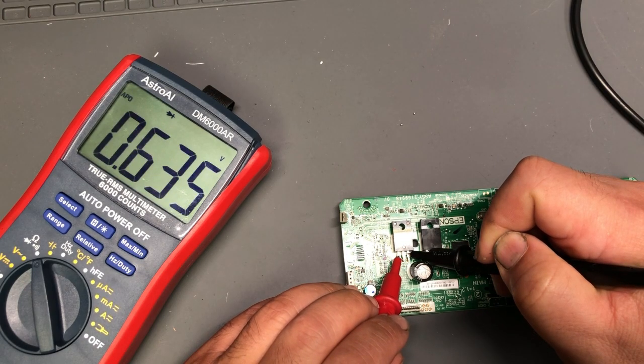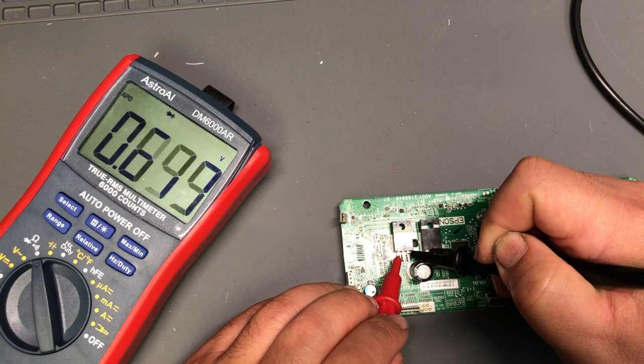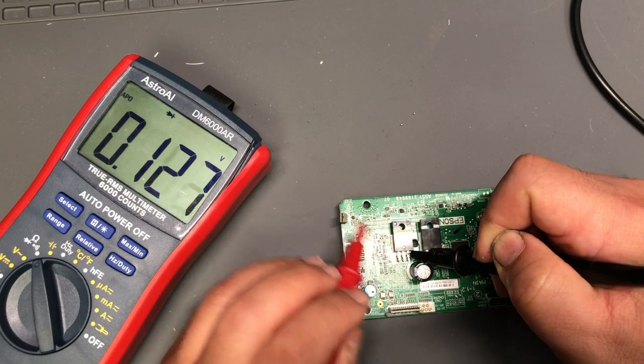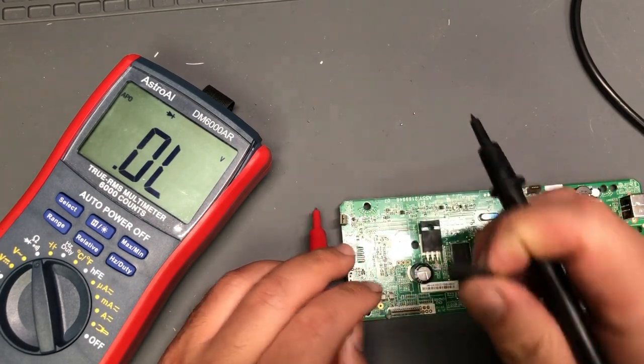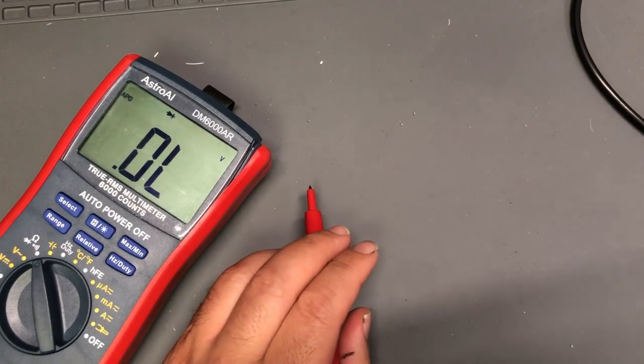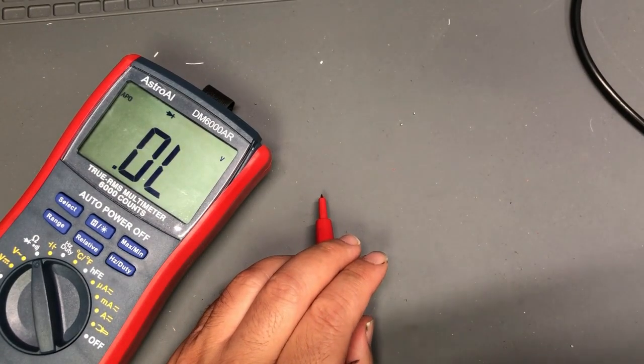The key is the first test is about 0.6 something. See, it's good. Then remember, like earlier, when we go to the second one, it's really low. It depends on the board. Sometimes you get weird readings. If you're not sure, just take it off and check it off the board.